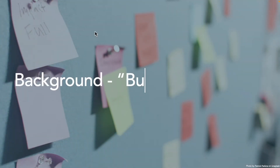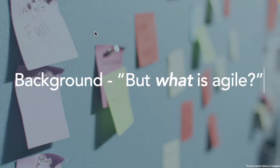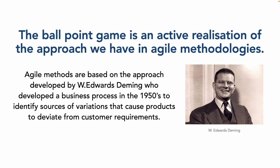In this lesson we're going to get a bit further into what agile actually is. This is really a bit of background to underpin what we've just experienced with playing the ballpoint game or conquer the numbers game. The ballpoint game, or the conquer the numbers game if that's what you played, is an active realization of the approach we have in agile methodologies.